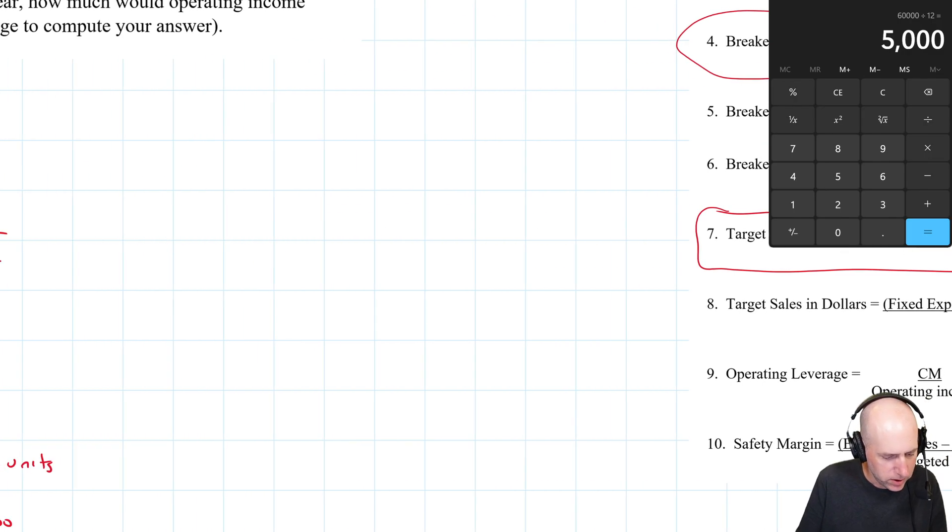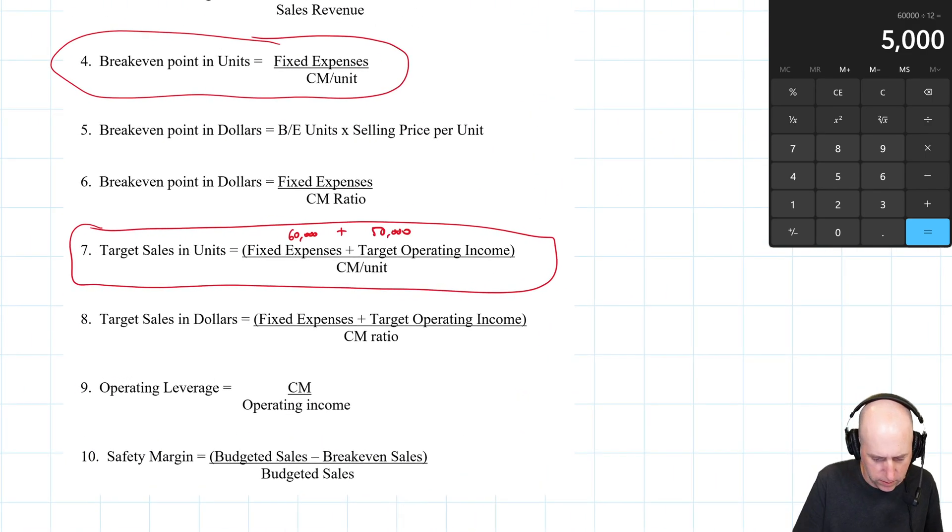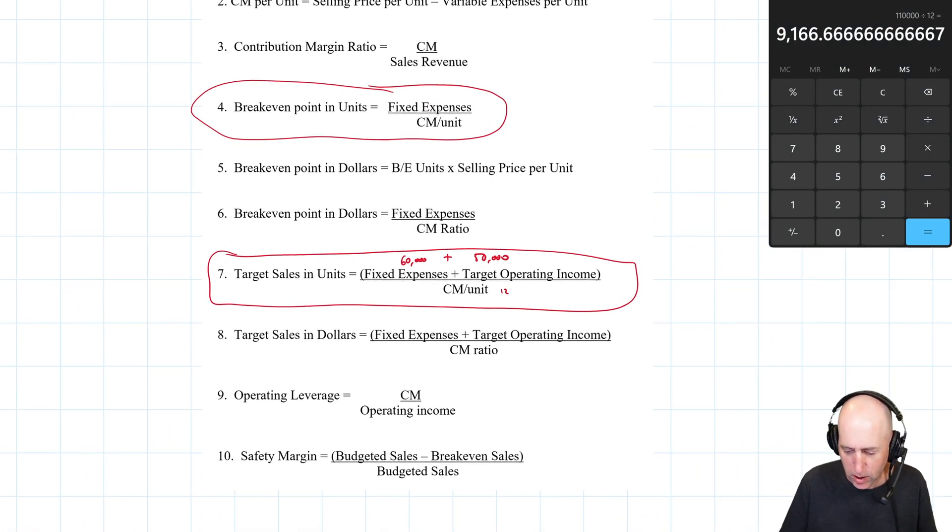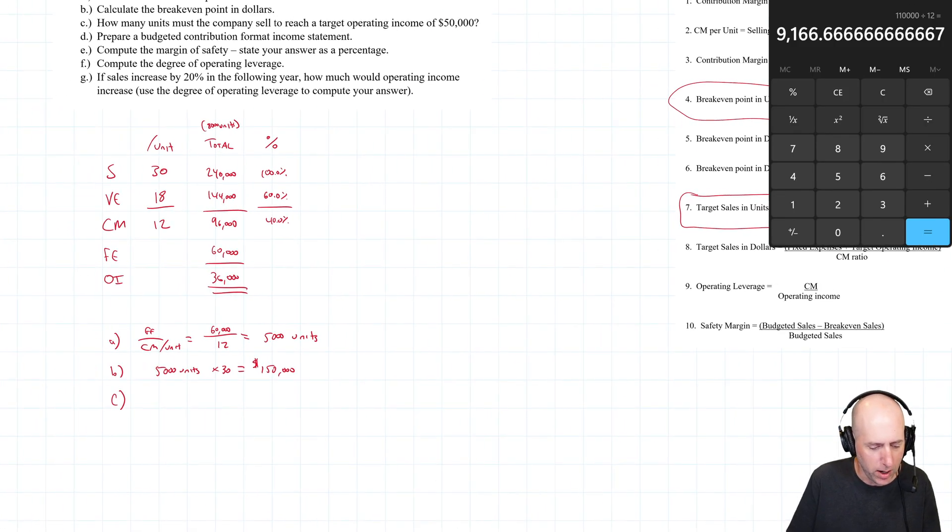My target operating income was $50,000, and my CM per unit was $12. So 60,000 plus 50,000 divided by 12, that's 110,000 divided by 12, which is 9,166.666. So I need to sell 9,167 units to hit that target profit.